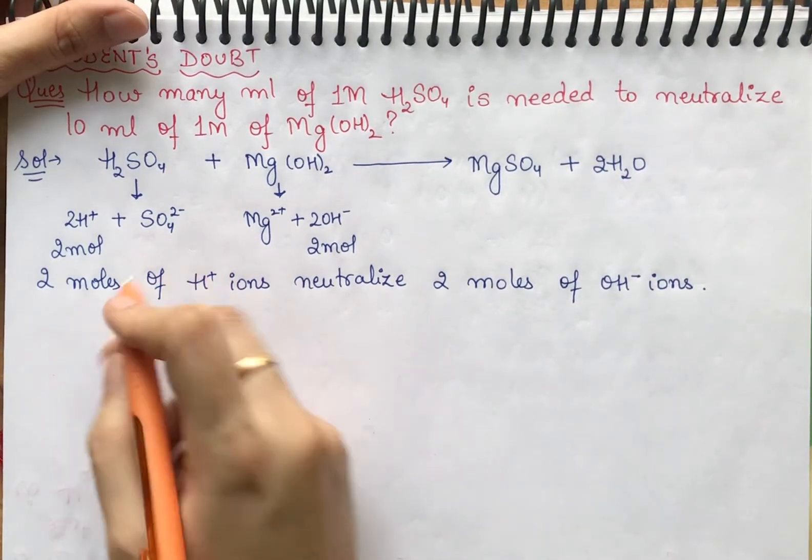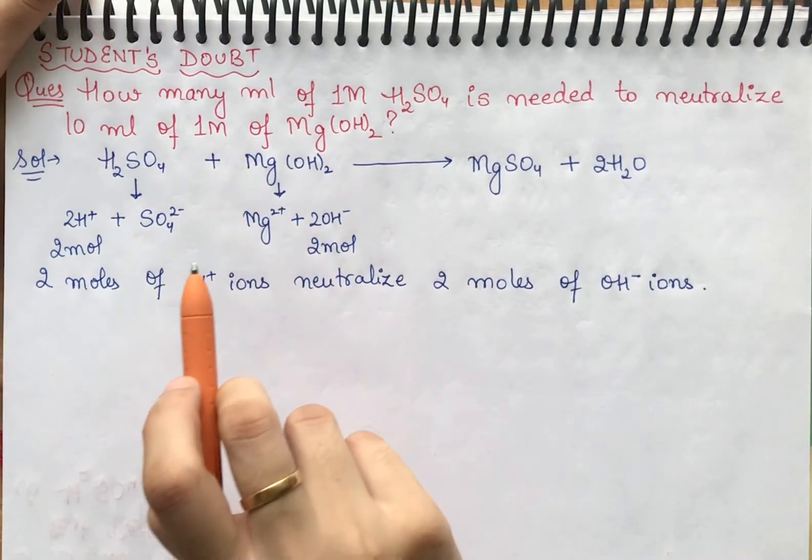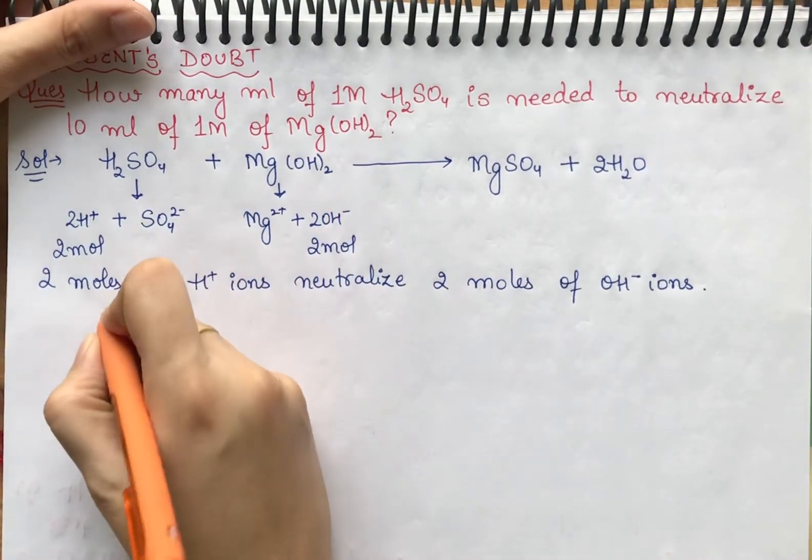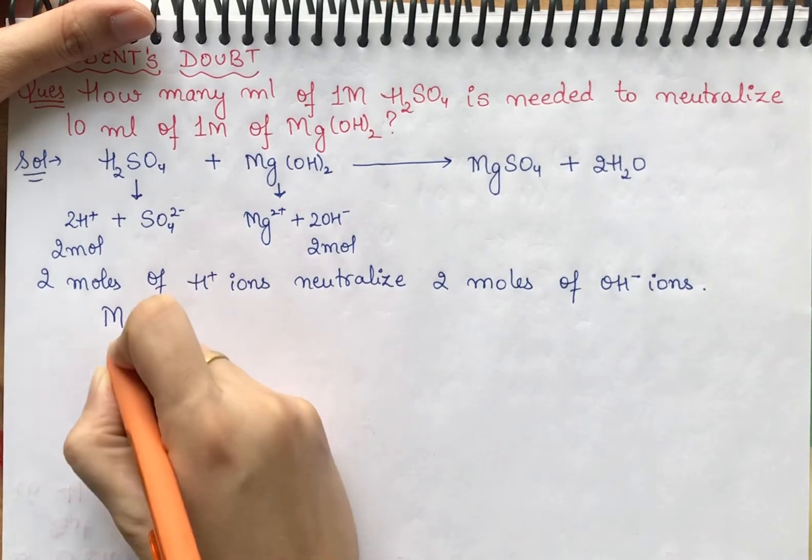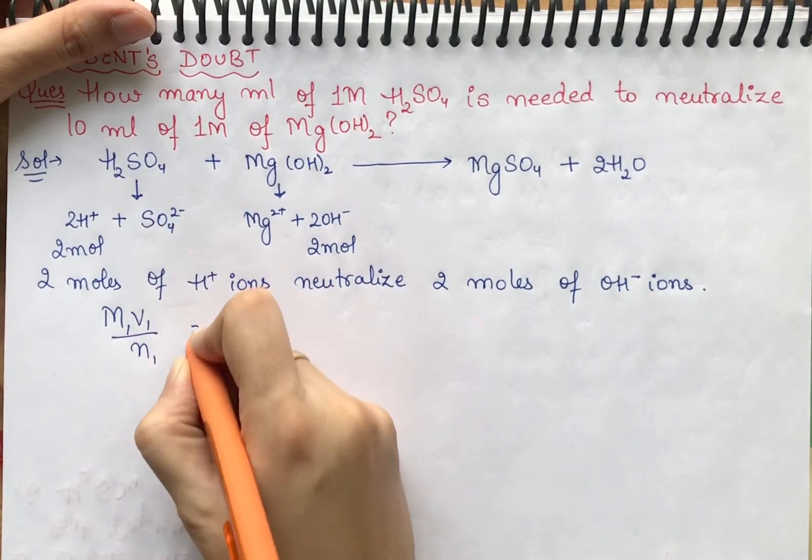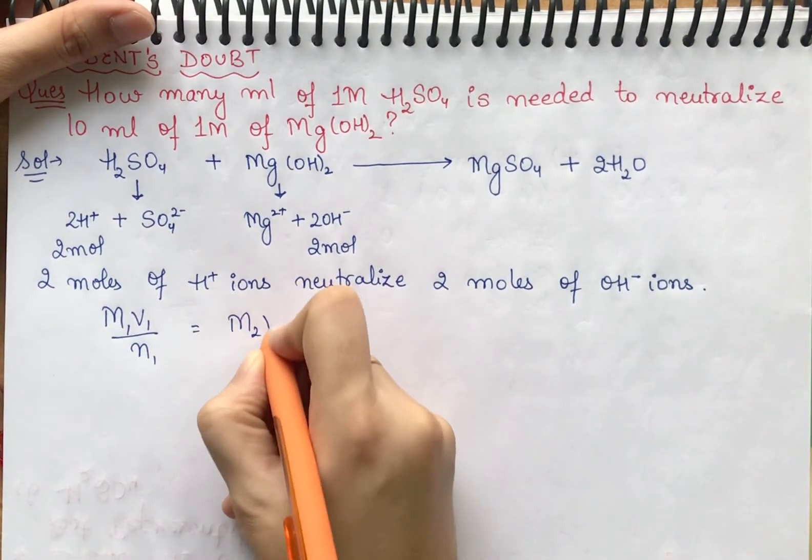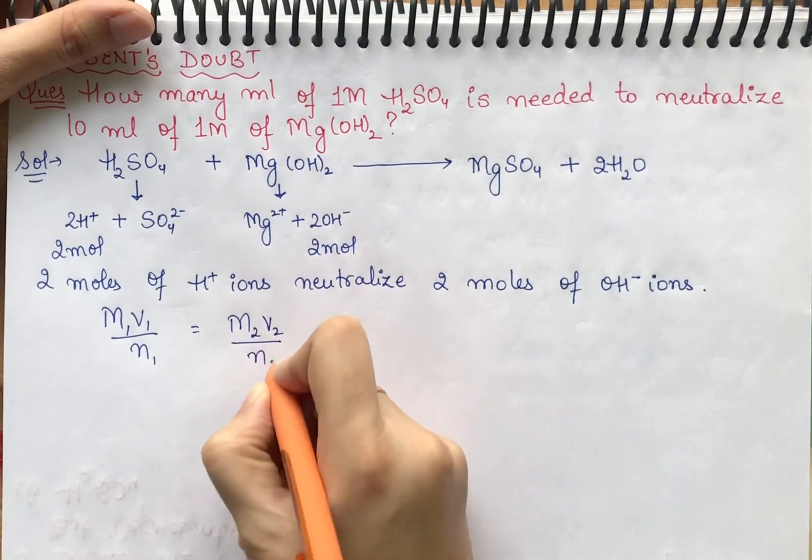Now when we have two solutions given with H+ ions, we will use the formula M1V1/N1 = M2V2/N2.